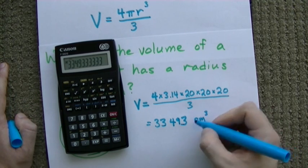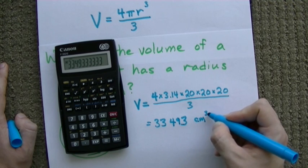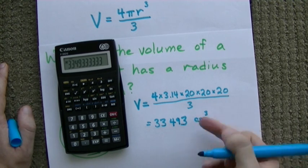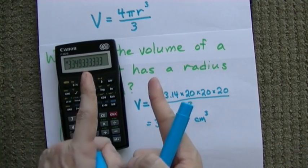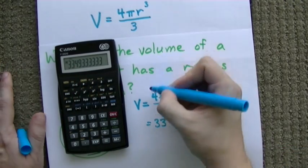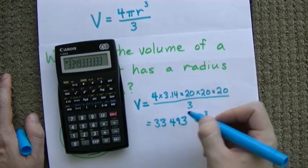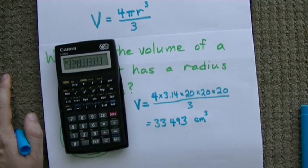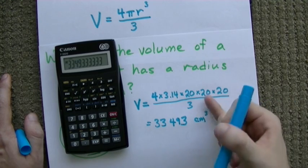Now I should note that the units here are centimeters with that little exponent 3 on it. That's how we show that we're not talking about length in centimeters. We're not talking about area in centimeters squared. We're talking about an amount of space that's being taken up in centimeters cubed.